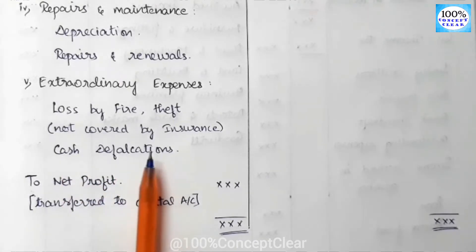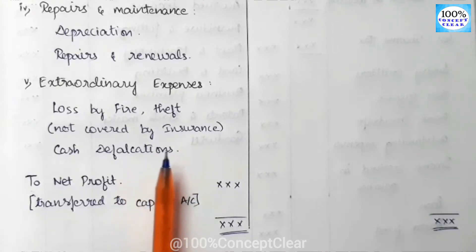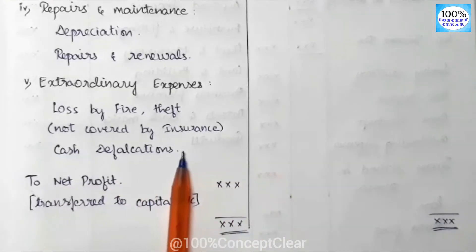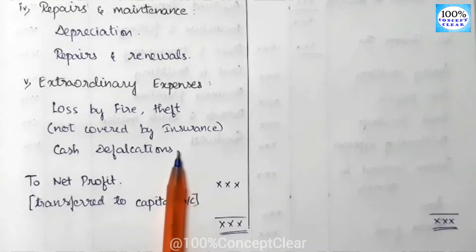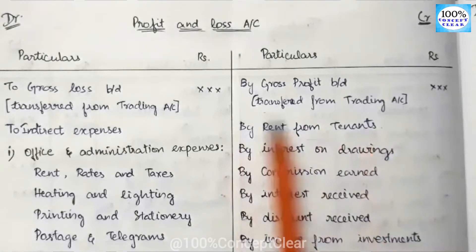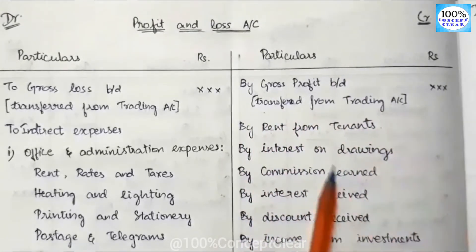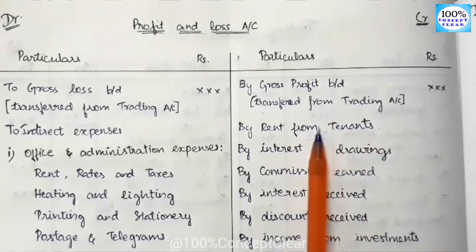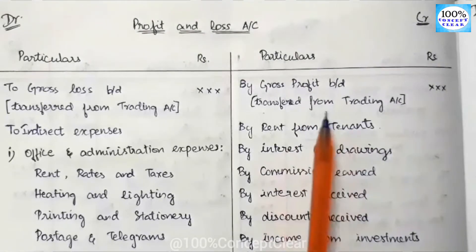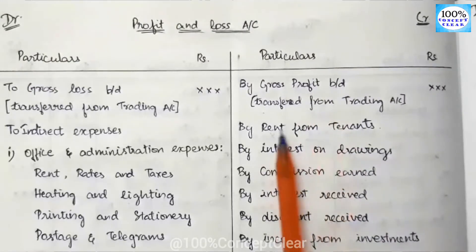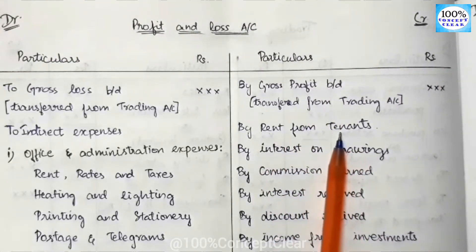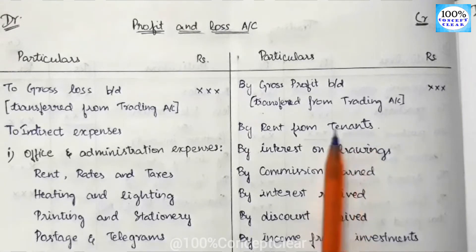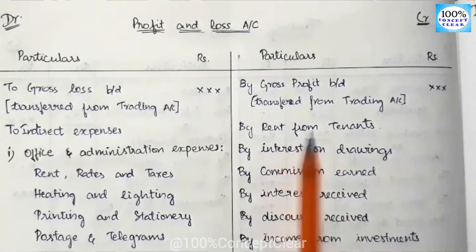Now we are looking at all the items on the indirect expenses side — these are office-related expenses in the P&L account. Next, let's look at the credit side. The first item on the credit side is gross profit. Then, rent received from tenants — if part of a factory or building is rented out, tenants pay rent and that is income.